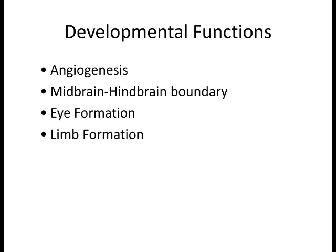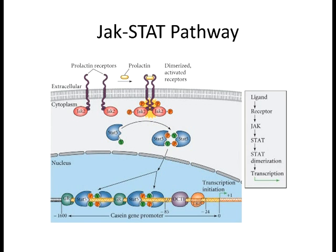In fact, there are drugs that can block angiogenesis typically used to slow down cancer progression because of these growth factors. The JAK-STAT pathway is another example of the FGF family of signaling. Again: ligand, dimerization of receptors, phosphorylation. In this case you get two proteins phosphorylating each other, going into the nucleus and initiating transcription. These are just some examples of pathways you might read about in the book.